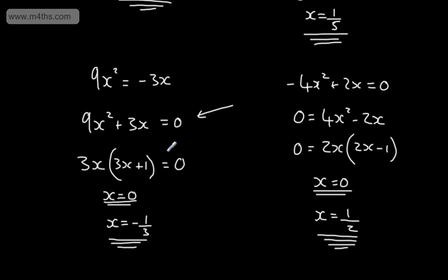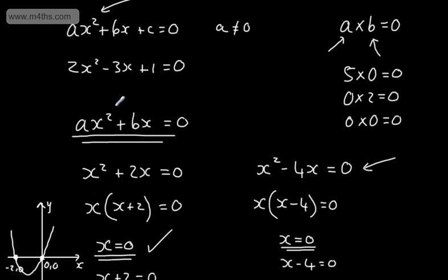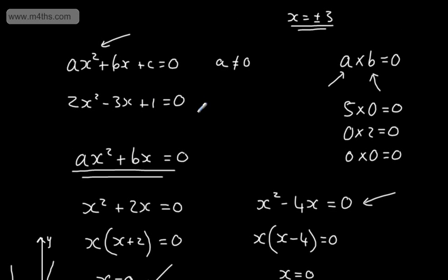If this problem were in context, you would check both solutions and make sure each is valid. For example, if x represented time, we couldn't have a negative value as negative time doesn't really exist. So we're looking at a quadratic equation that has an x squared term and an x term but no constant. A quadratic with a constant would be something like x squared minus x plus 3, where 3 is the constant. In this video, we've covered one of the ways to deal with equations when there's no constant.